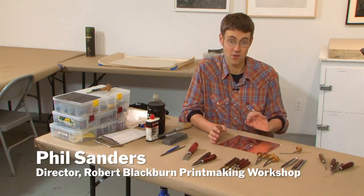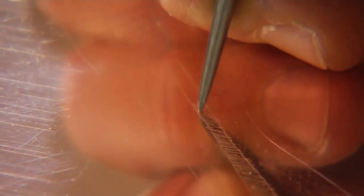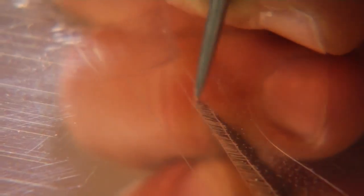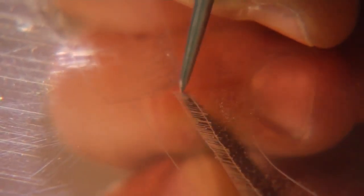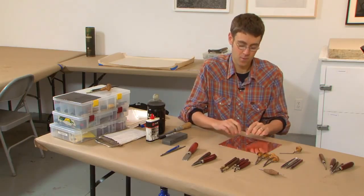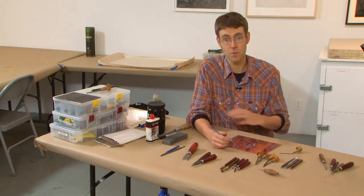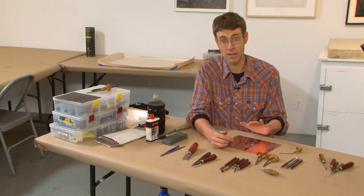One of those is the dry point, which is a direct scratching or moving of the material on the plate. If I were to take one of our etching tools, in this case a steel scribe, and scratch the surface of this plate, that scratch will raise a burr where the metal has been moved from side to side. In dry point we're typically not removing metal, we're actually moving it.